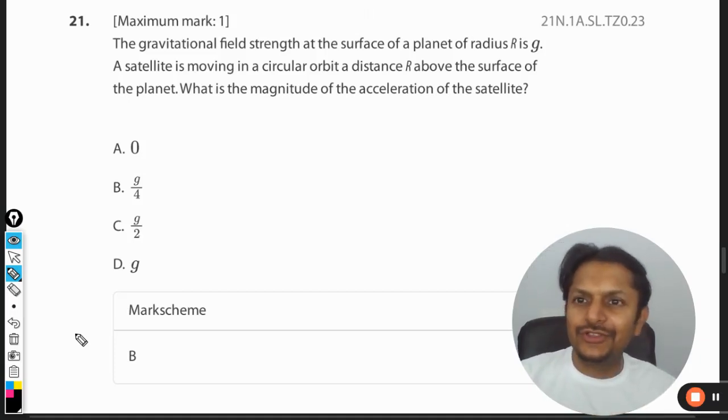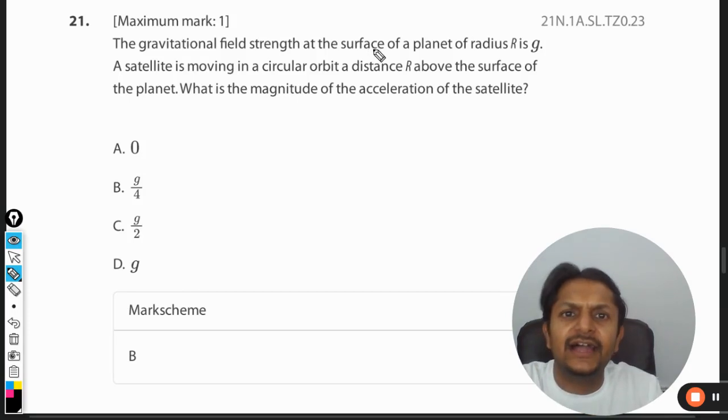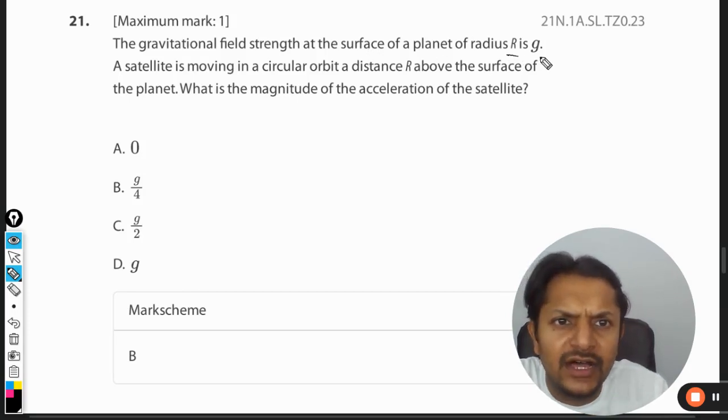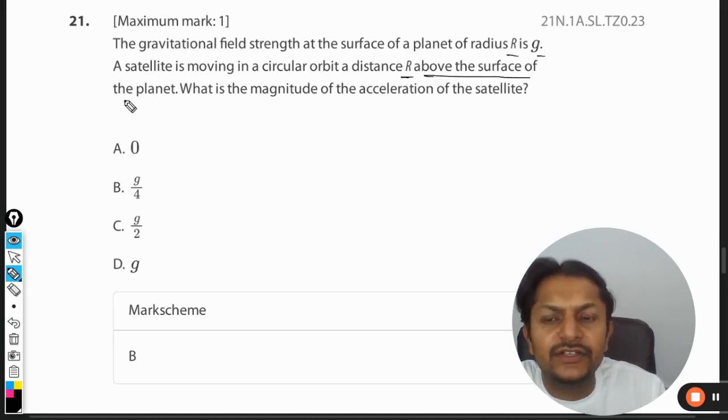Okay, let's see what is there in this question. The gravitational field strength at the surface of the planet of radius R is g. A satellite is moving in a circular orbit of distance r above the surface of the planet.